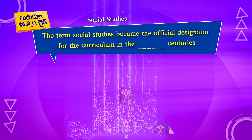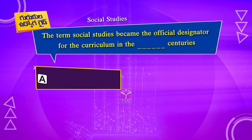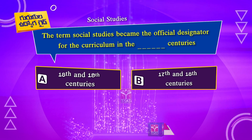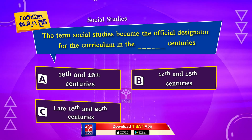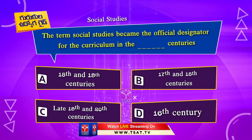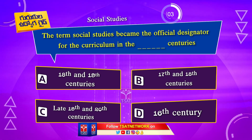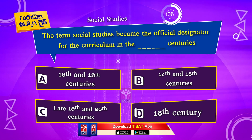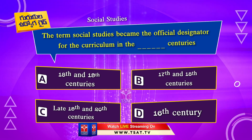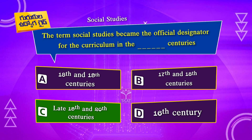The term social studies became the official designator for the curriculum in: Option A. Eighteenth and nineteenth centuries. Option B. Seventeenth and eighteenth centuries. Option C. Late nineteenth and early twentieth centuries. Option D. Sixteenth century. The correct answer is Option C. Late nineteenth and early twentieth centuries.